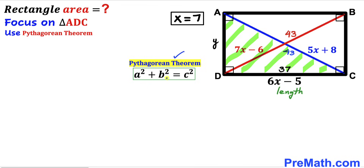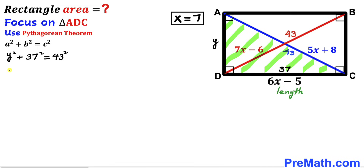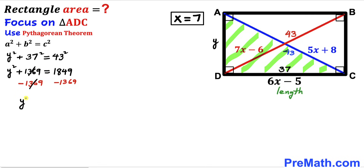The Pythagorean theorem states A squared plus B squared equals C squared. In our case the hypotenuse is 43, and the two other legs are 37 and Y. Filling in the formula: Y squared plus 37 squared equals 43 squared. Simplifying, 37 squared is 1369 and 43 squared is 1849. Subtracting 1369 from both sides gives us Y squared equals 480.